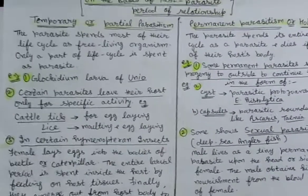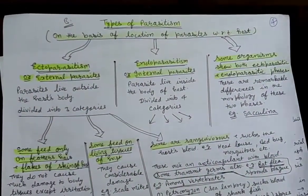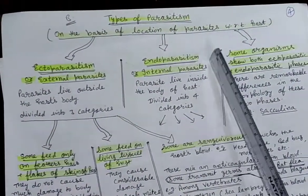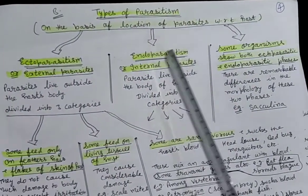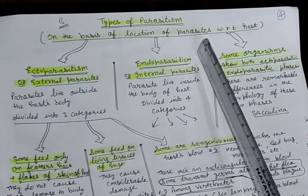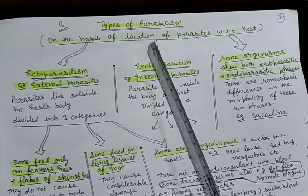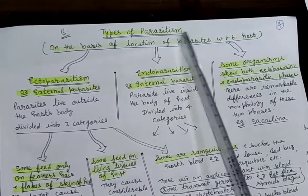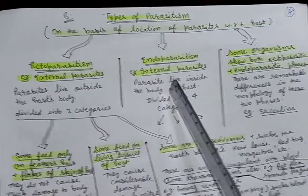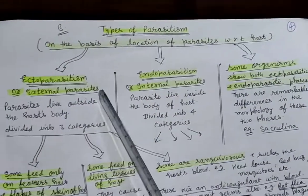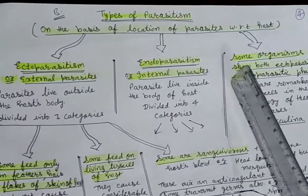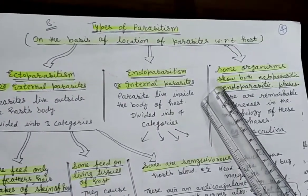Now we are moving towards the next type of parasitism, which is based on the location of the parasite with respect to the host — that is, where the parasite is located in or on the host. On the basis of location of the parasite with respect to the host, there are 3 types of parasitism: ectoparasitism and endoparasitism. Ectoparasitism is where the parasite lives outside the host body, while in endoparasitism the parasite lives inside the body of the host.